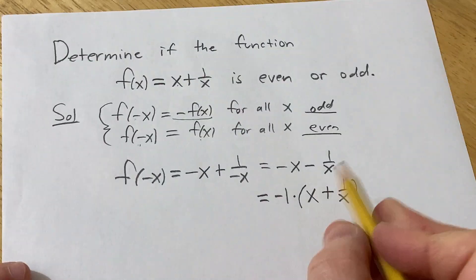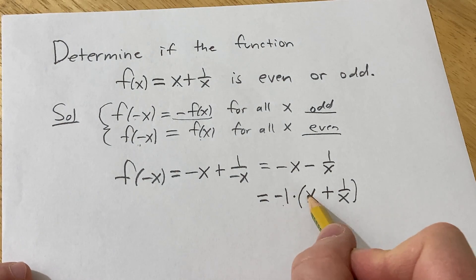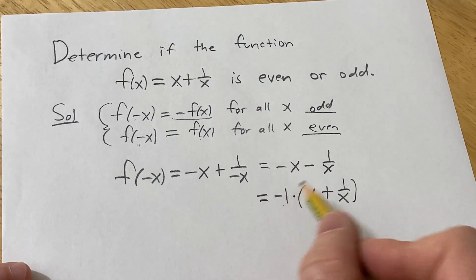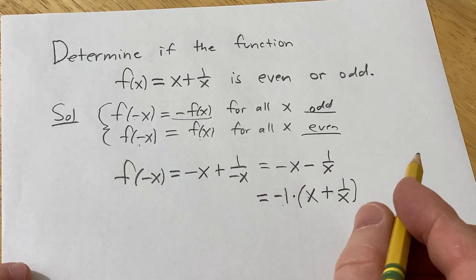Factoring out the negative 1, you can check: negative 1 times x is negative x, and negative 1 times 1 over x is negative 1 over x.